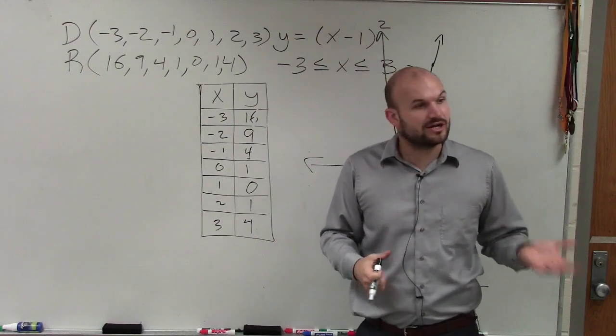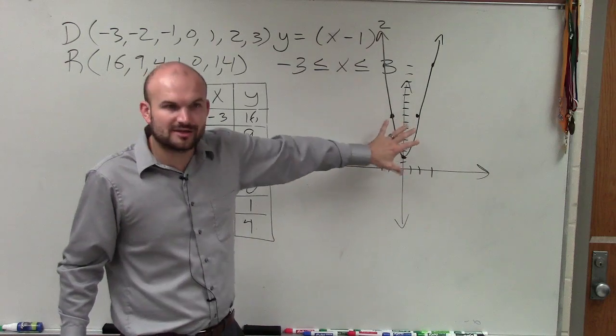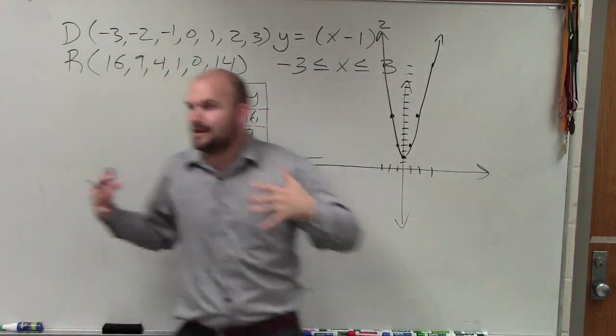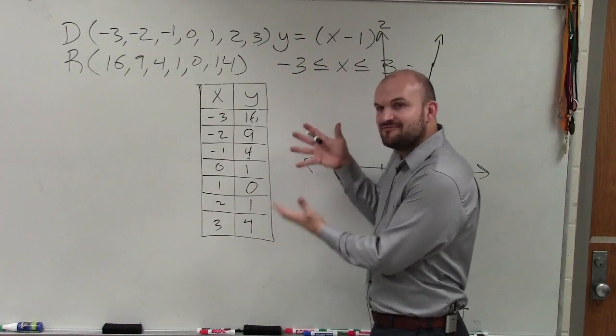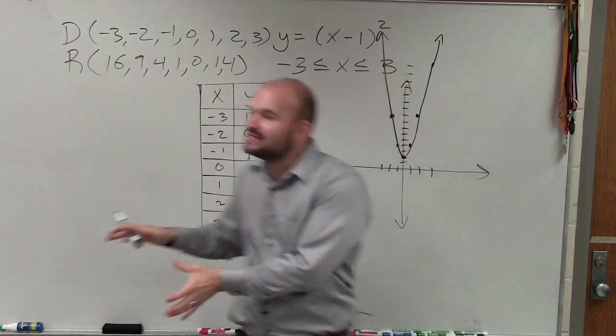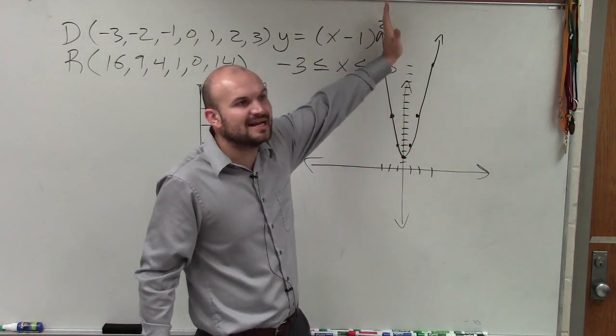Where students now start having trouble is when we start getting into a graph. When we start looking at the graph, not of the table, because the table is finite. This is all I have in the table. But the graph is not finite. The graph has arrows. It continues on and on and on forever.